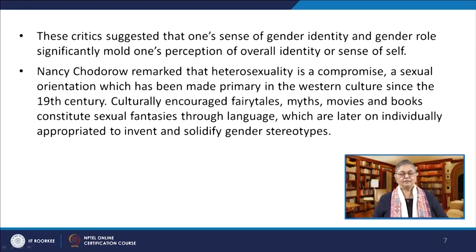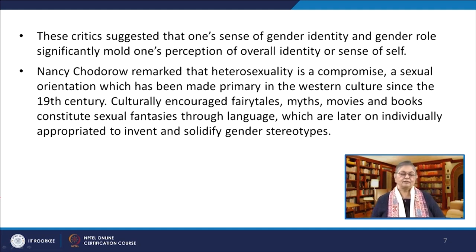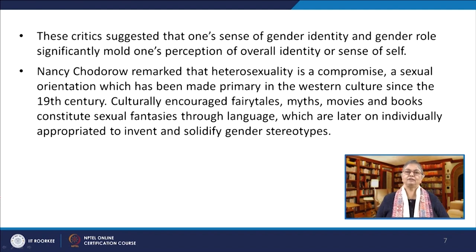In the early phase, radical second wave feminism was characterized by a claim for sisterhood and solidarity, with slogans like 'Women's struggle is class struggle' and 'the personal is political', combining social, sexual and personal struggles. Post-feminist critics like Butler, Nancy Chodorow and Teresa de Lauretis critically assessed existing perceptions on feminism, gender and sexual categories. These critics suggested that one's sense of gender identity and gender role significantly mould one's perception of overall identity. Nancy Chodorow remarked that heterosexuality is a compromise, a sexual orientation made primary in western culture since the 19th century.